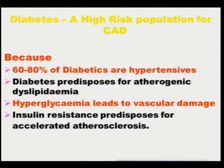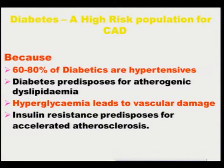Diabetics are a high-risk population for coronary atherosclerotic disease. This is because 60 to 80 percent of diabetics are hypertensives. Diabetes predisposes for atherogenic dyslipidemia, especially the LDL fraction in a diabetic is small and dense, which is more atherogenic. Hyperglycemia leads to vascular damage, and insulin resistance predisposes for accelerated atherosclerosis.